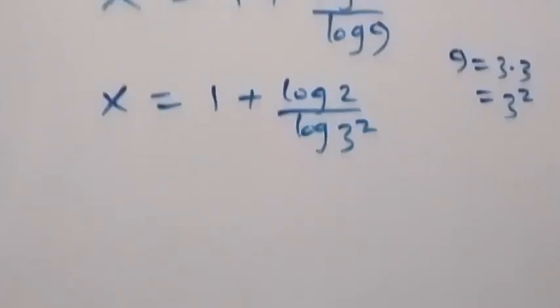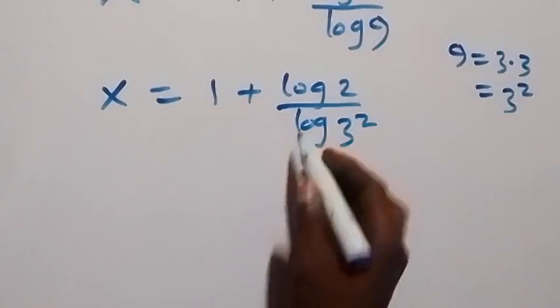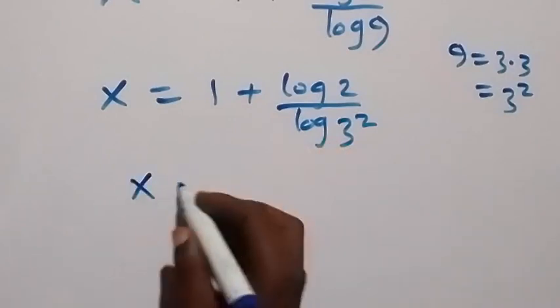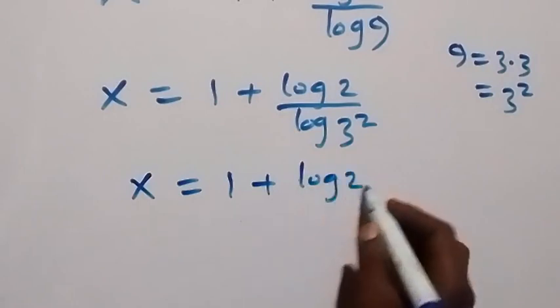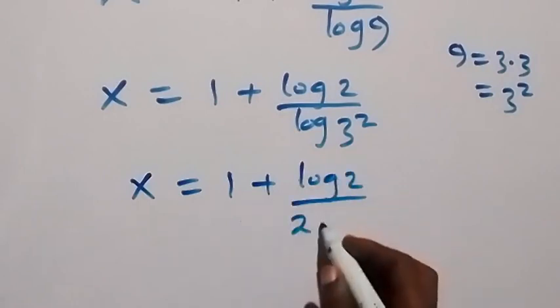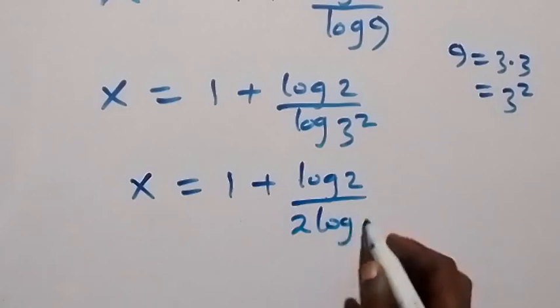And from here, applying the power rule, the 2 can come here. And this will give us x equals 1 plus log 2 over 2 log 3.